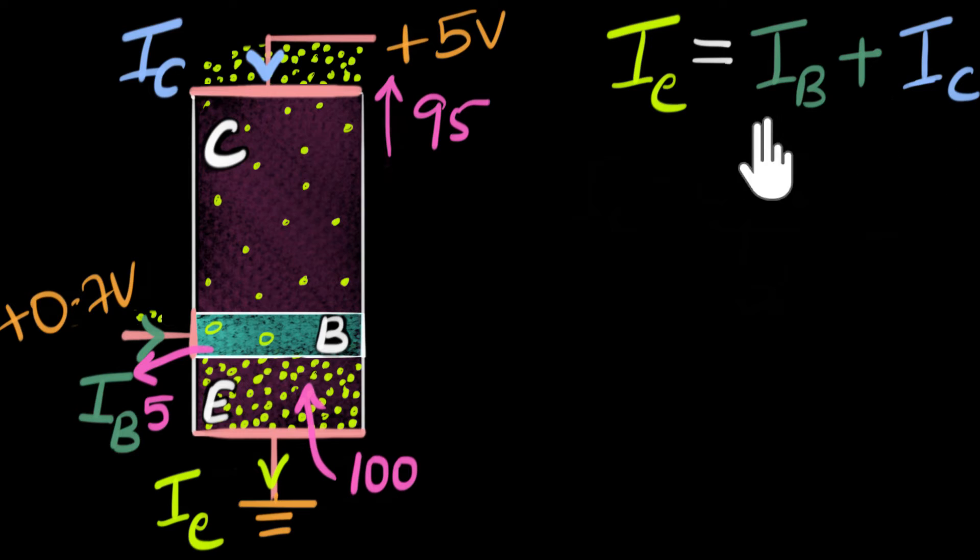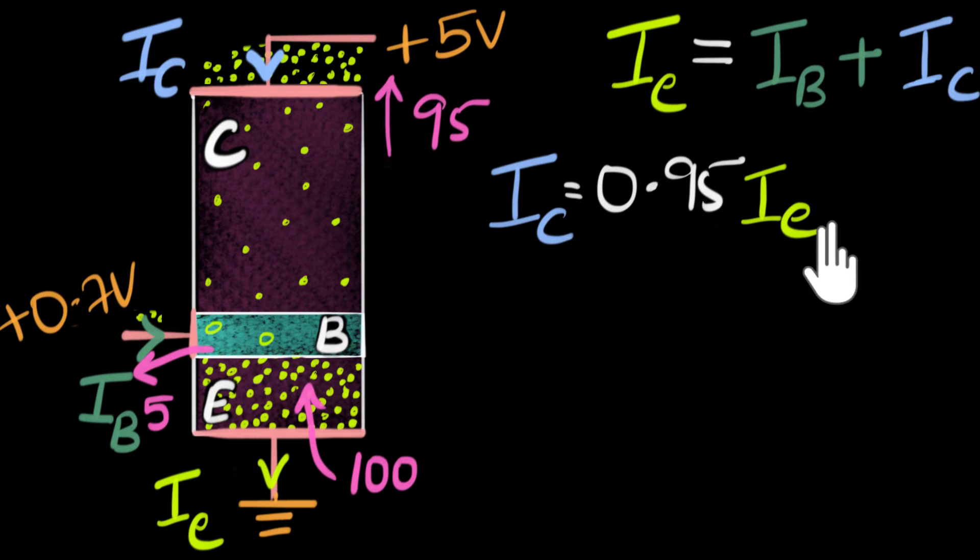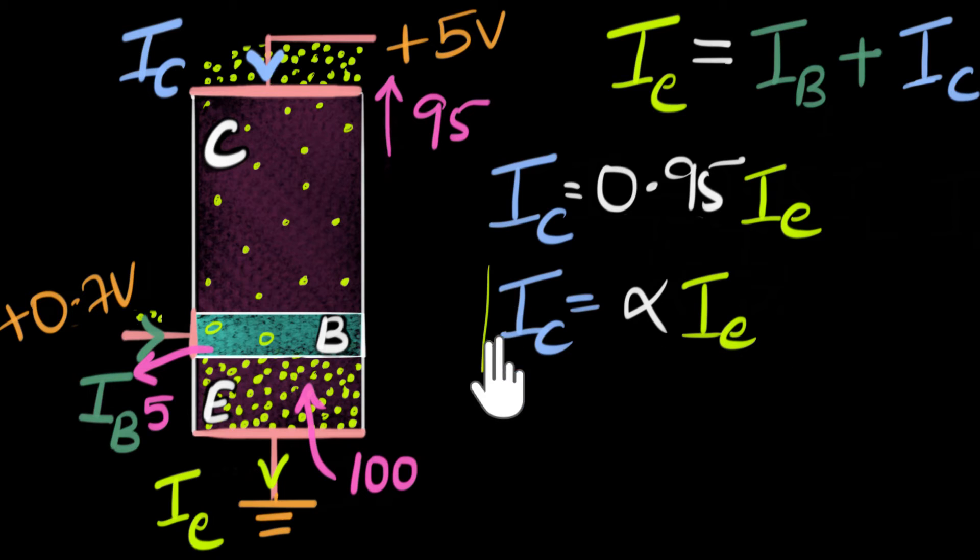And we can find more connections between the currents. For example, if you look over here, out of 100 electrons that got injected, about 95 electrons went through over here. And so we could say the collector current is 95% of the emitter current, right? So we can write that over here. For our example, we could say the collector current IC is 95%, which means 0.95 times the emitter current. And this number is usually represented as alpha. So in more general terms, we could say IC equals alpha times IE. In our example, this alpha is about 0.95.